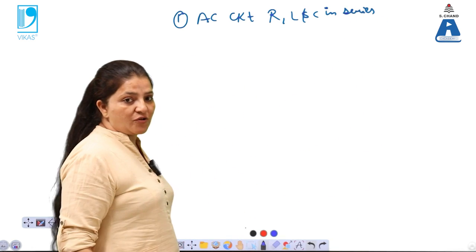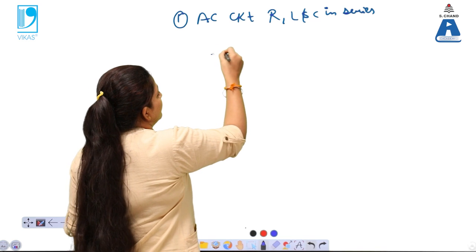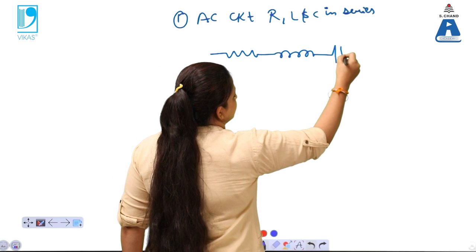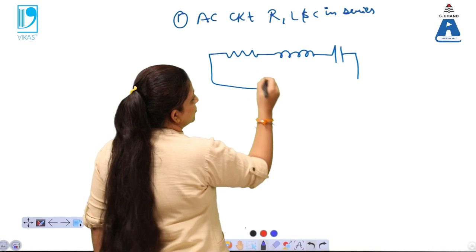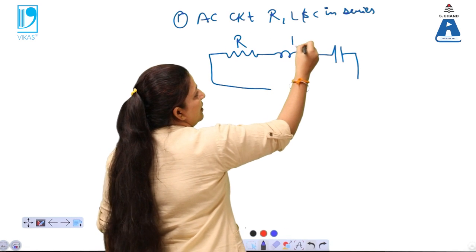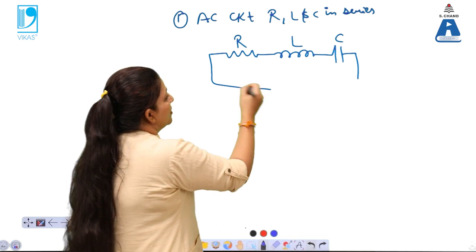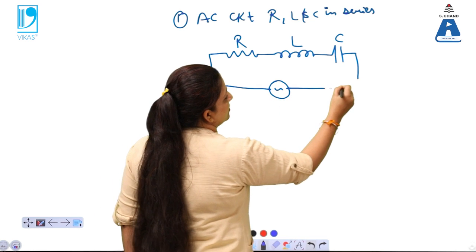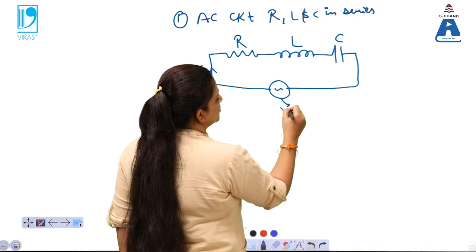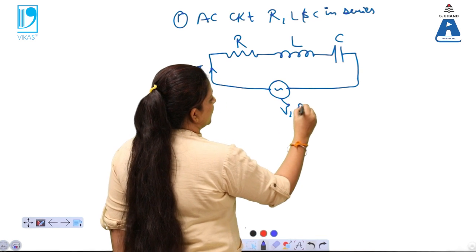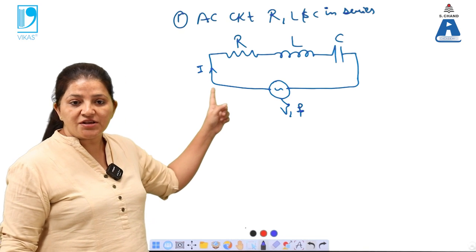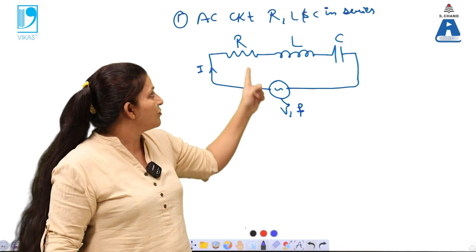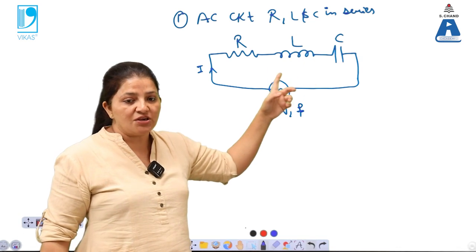In the series combination, we have a resistance, an inducing coil, and a capacitance — this is a series combination of R, L, and C. The current I is flowing through the circuit. An AC input source is applied with voltage V and frequency F. In the series combination, the current I flowing through R, L, and C is the same, and the voltage drop occurs across R, L, and C.